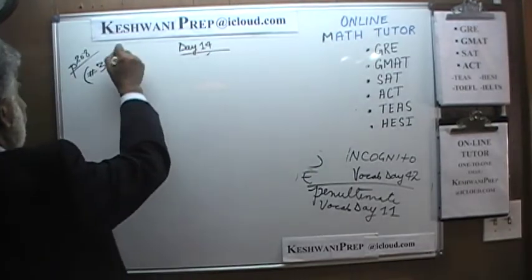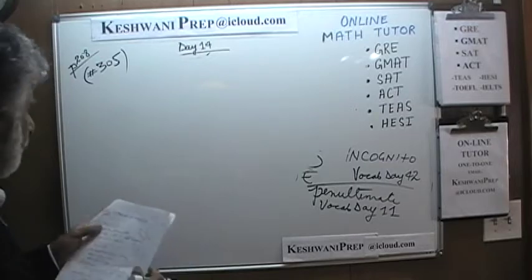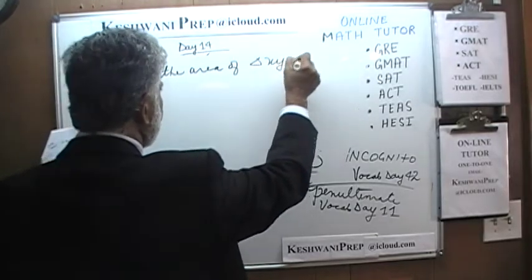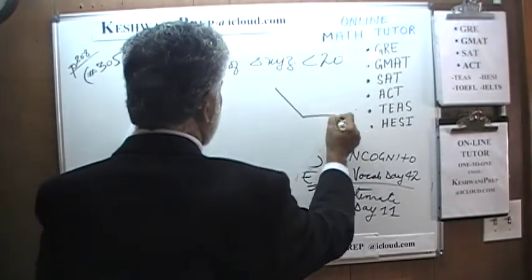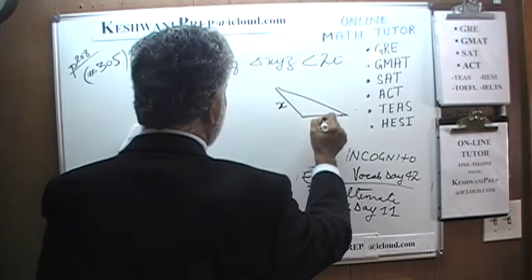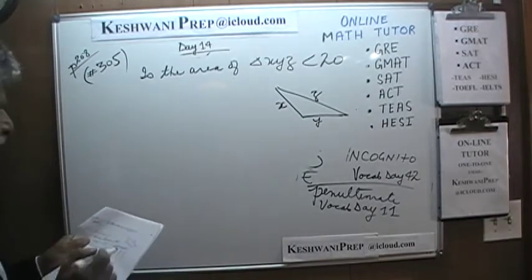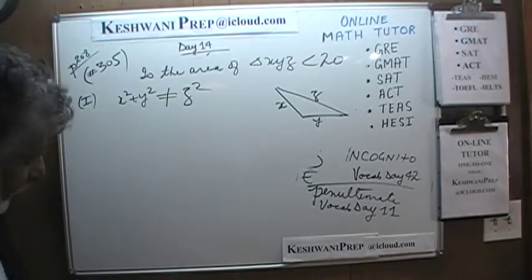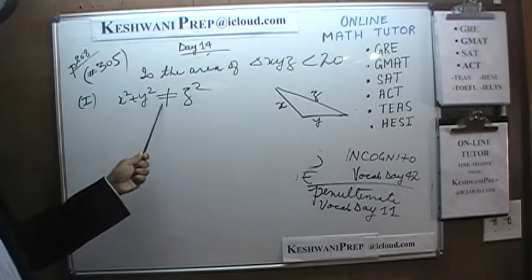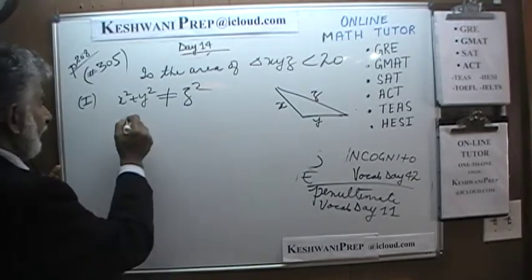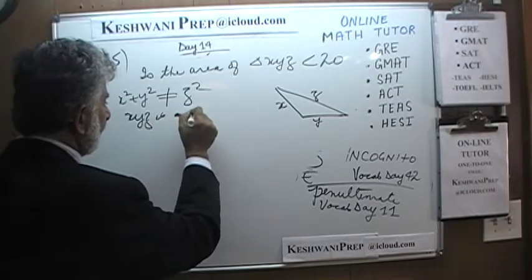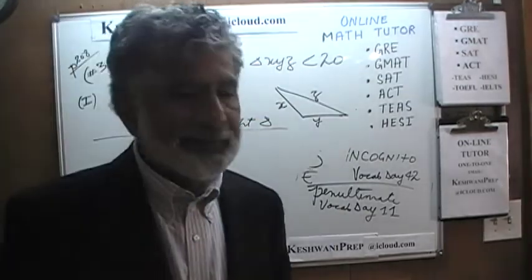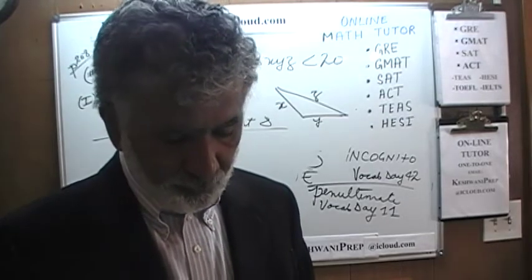Number 305. The question is: is the area of triangle XYZ less than 20? The first statement tells us that X² + Y² does not equal Z². If it did equal Z², the triangle would be right-angled. So what they're telling us is that XYZ is not a right triangle. But simply knowing that does not enable us to determine whether the area is less than 20.